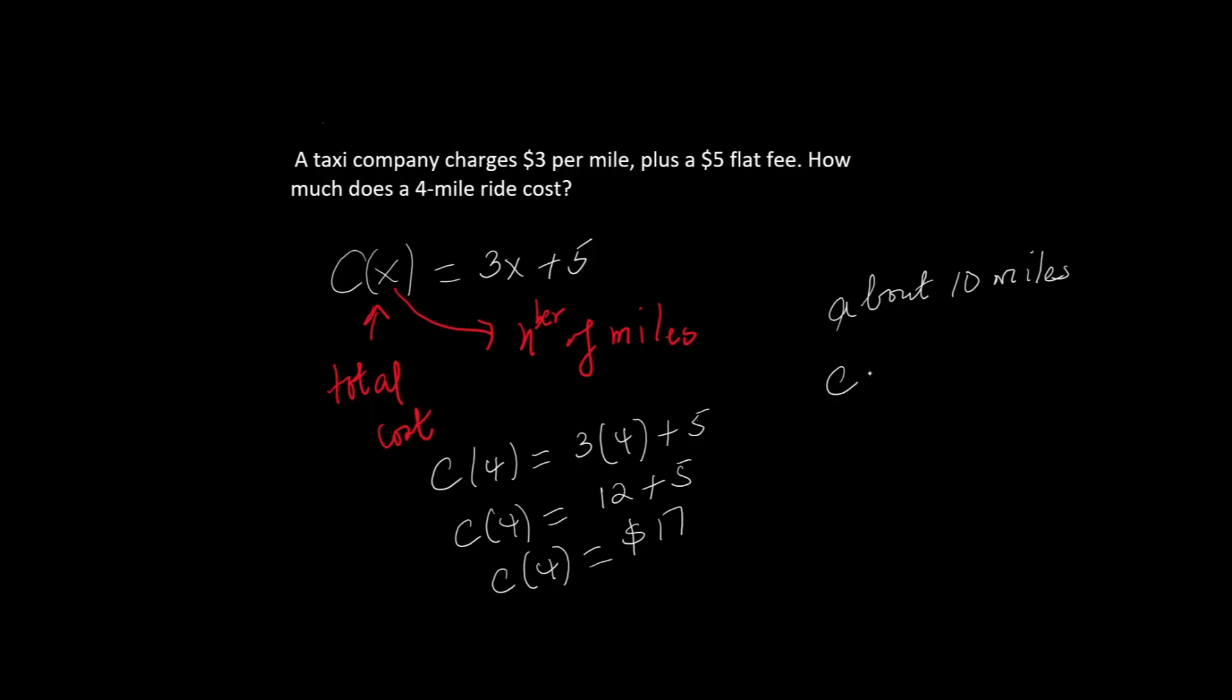Now let's try a 10-mile ride. This time we evaluate c(10). That's 3(10) + 5. 3 times 10 is 30. 30 + 5 is 35. So a 10-mile ride costs $35.